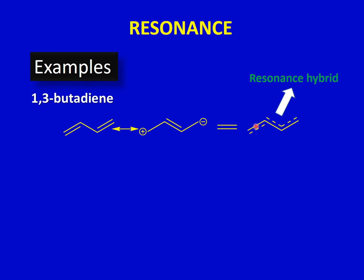This means the single bond between carbon two and three has some double bond character because of resonance, and the two double bonds have some single bond character. The double bonds between C1–C2 and C3–C4 do not have the same bond length as a normal carbon–carbon double bond, and the single bond between C2 and C3 is slightly shorter than a normal C–C single bond, while the double bonds are slightly longer. This is one manifestation of resonance in 1,3-butadiene.